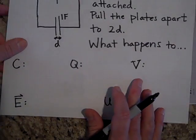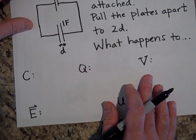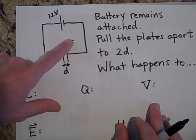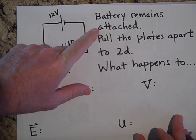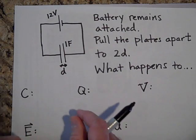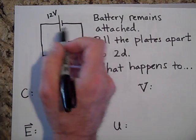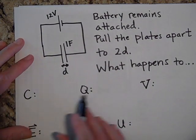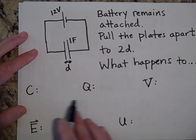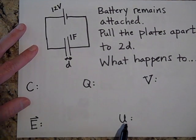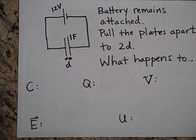One more question. We hook up a 12-volt battery to a one-farad capacitor, the battery remains attached, and we pull the plates apart to 2d — we physically separate the plates to twice the original distance while it stays connected. What happens to the capacitance, charge, voltage, electric field, and potential energy? Go ahead and pause and really try this.